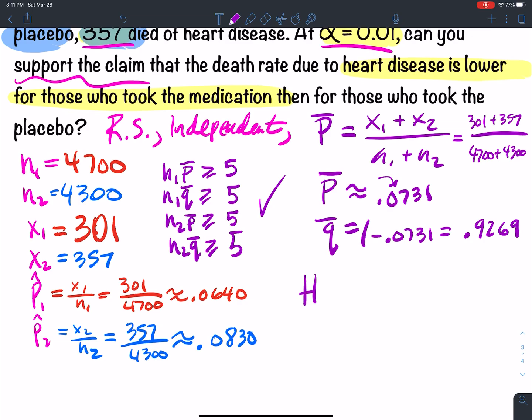So let's set up our H0 and our Ha. So the H0 and the Ha. What is the claim? The claim, can I support the claim that the death rate for heart disease is lower for those who took the medication than for those who didn't take it?